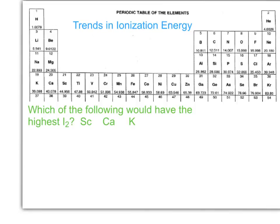That means remember I1 is the first electron removed and I2 is the second electron removed. So what we're going to look for is some reason why one of these elements would have a much higher second ionization energy than another. Let's go ahead and find them all first and mark them. So here's scandium, calcium, and potassium - they're all together on the periodic table right there.